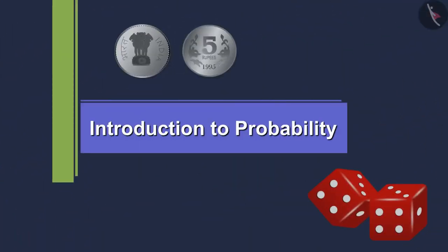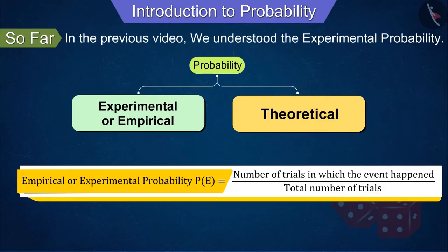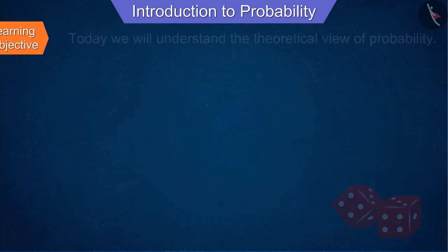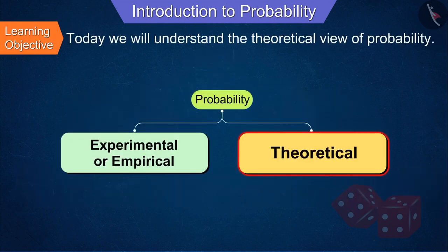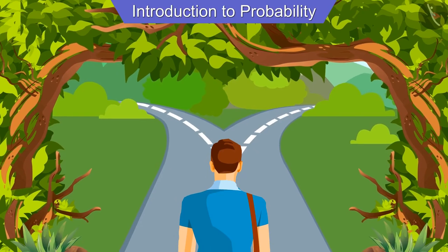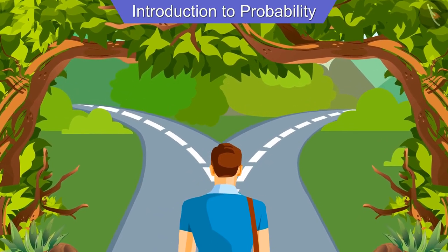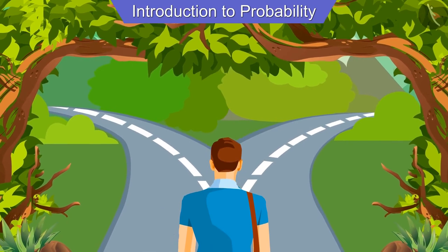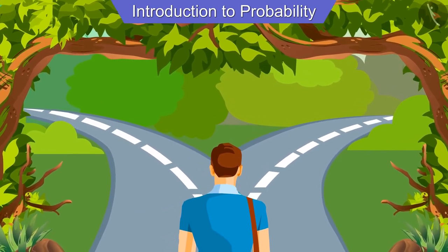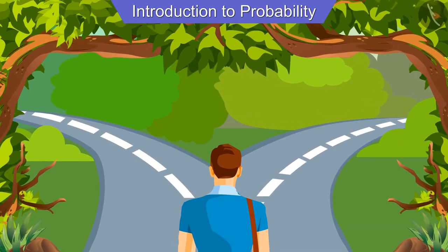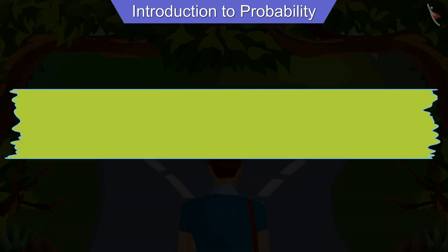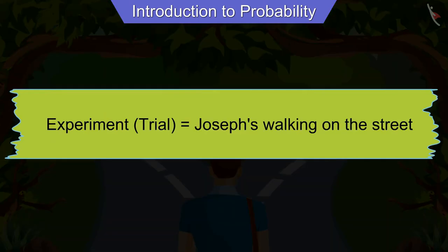Welcome to this video. In the previous video we understood the experimental probability. Today we will understand the theoretical view of probability. Joseph is going to his friend's house. The road on which he is walking further gets divided into two roads. Joseph starts looking for a signboard in order to find the right direction.